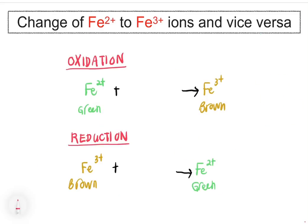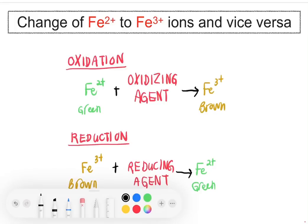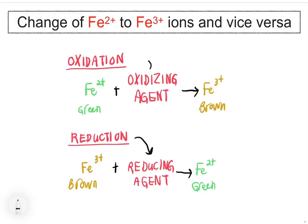In order for Fe2+ ion to undergo oxidation to Fe3+ ion, Fe2+ ion must react with an oxidizing agent. In order for Fe3+ ion to undergo reduction to Fe2+ ion, Fe3+ ion must react with a reducing agent. So Fe2+ reacts with oxidizing agent and undergoes oxidation, while Fe3+ reacts with reducing agent and undergoes reduction.